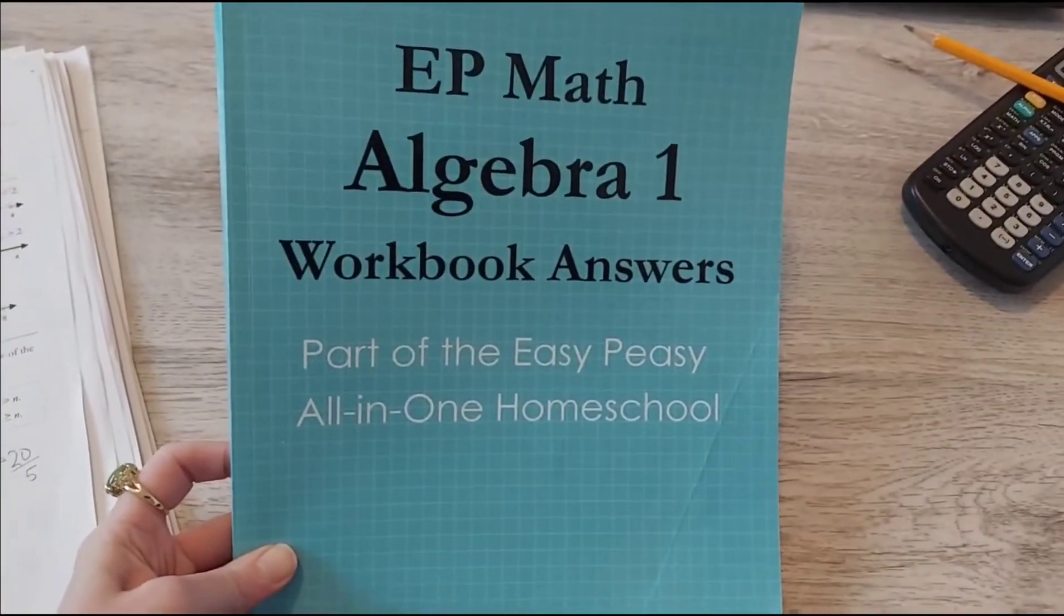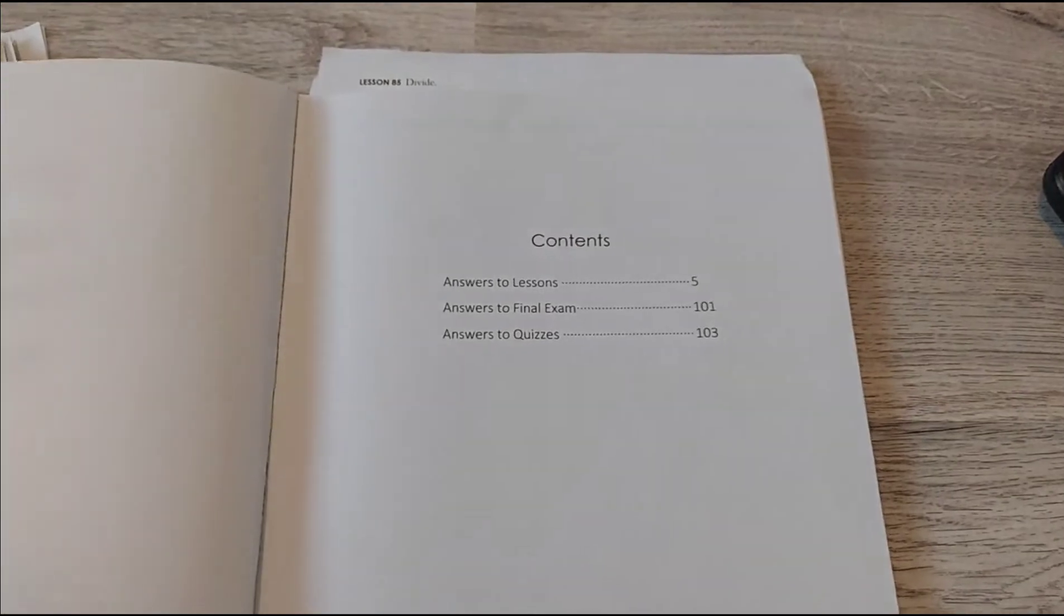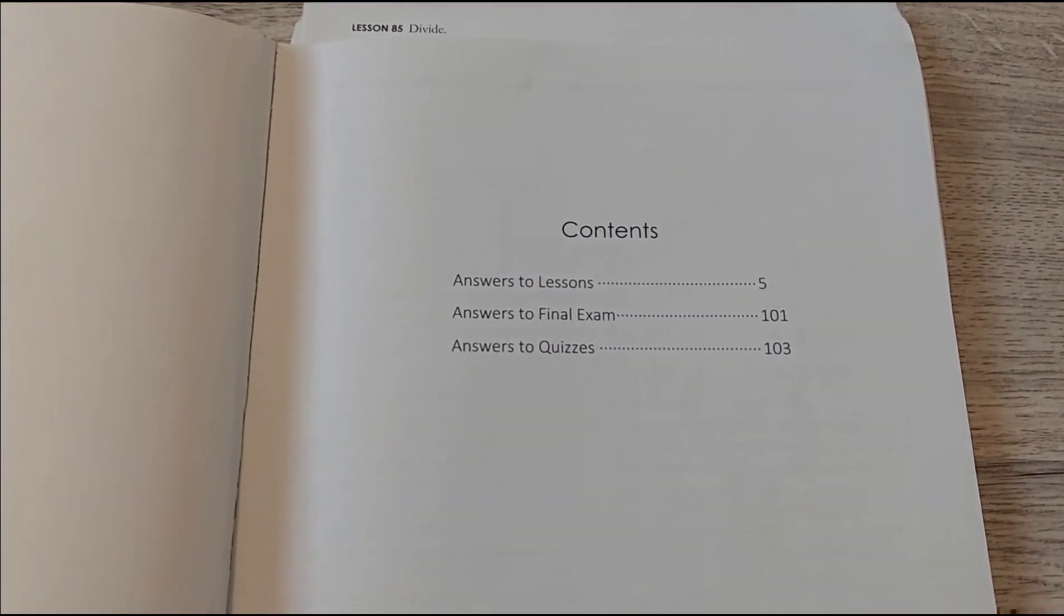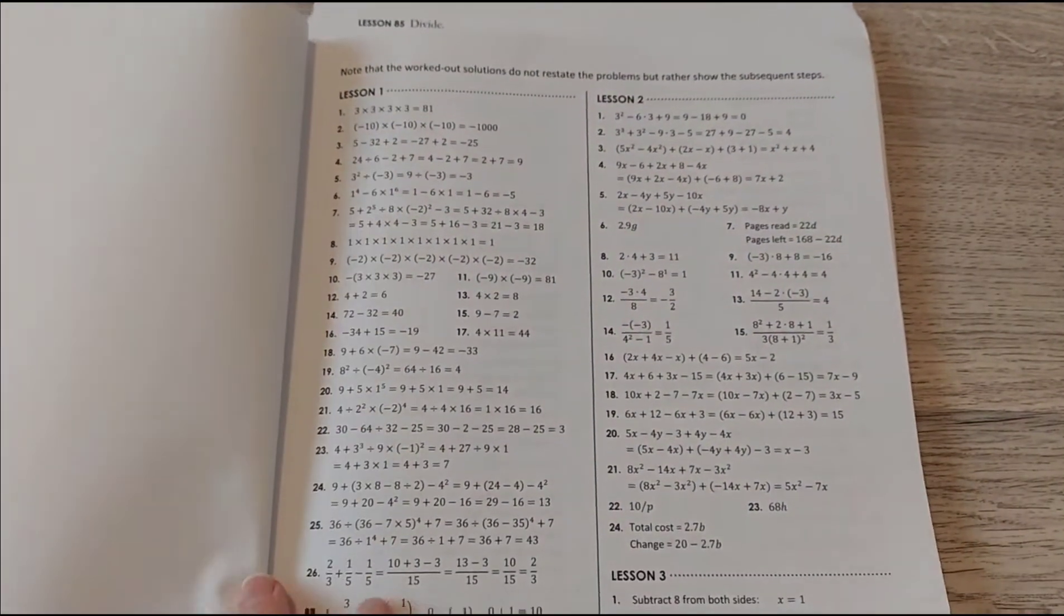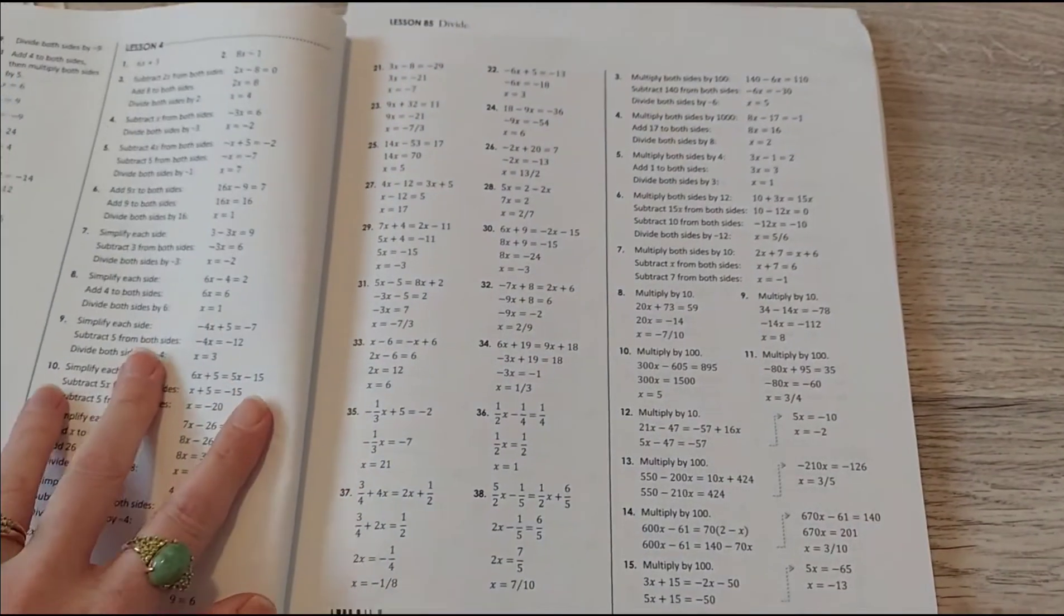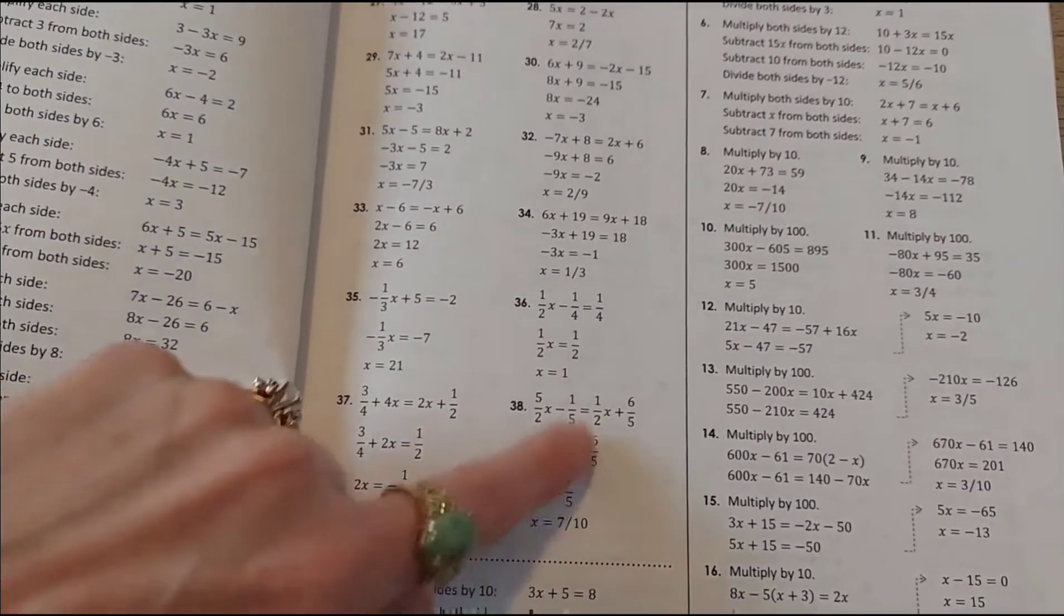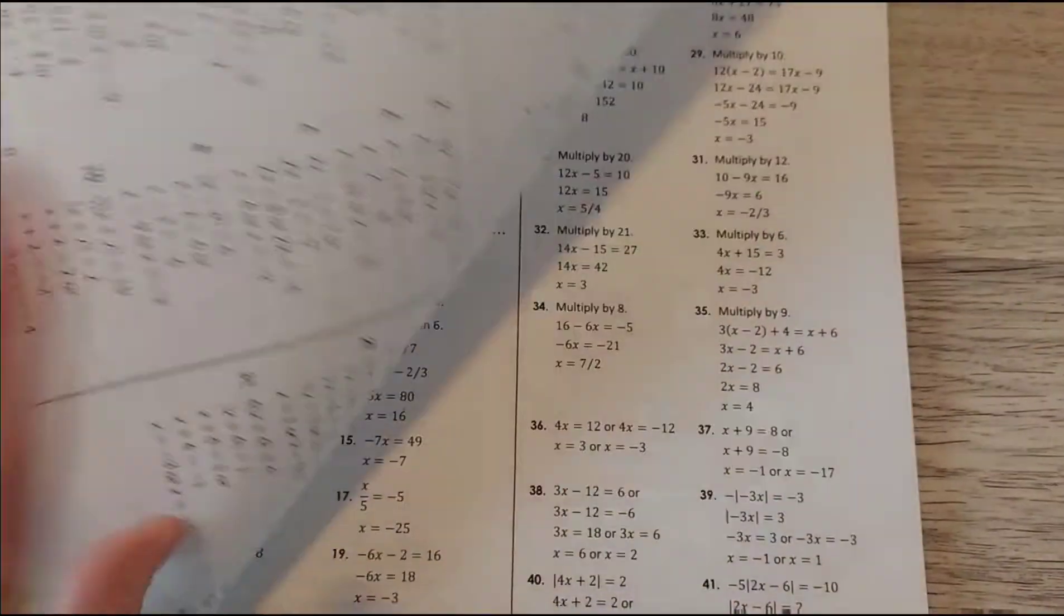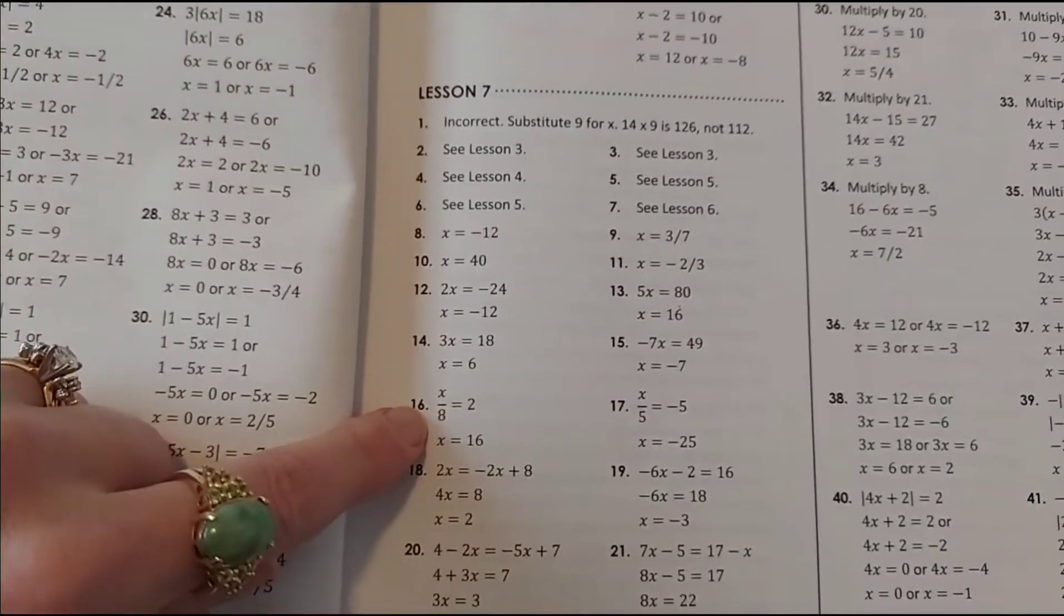This is the answer booklet which is definitely needed for the offline program. There's answers to lessons, answers to the final exam, and answers to the quizzes. And this first part is the answers to the lessons. And I love this because it's all broken down on how to get to your answers. Step by step. It's very easy to follow along with too.